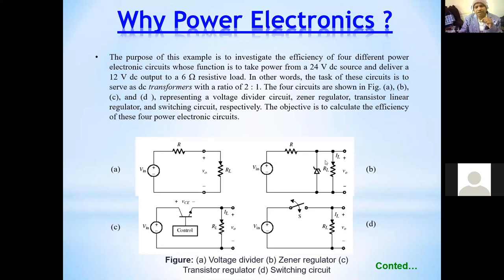Similarly, you can have a Zener regulator where you can regulate through Zener. Zener is mainly used for stabilizing the output voltage. You may have a transistor where you control the transistor VCE and get the output voltage. And then we have a switch, S, which is nothing but a power electronic switch that can turn on and off.